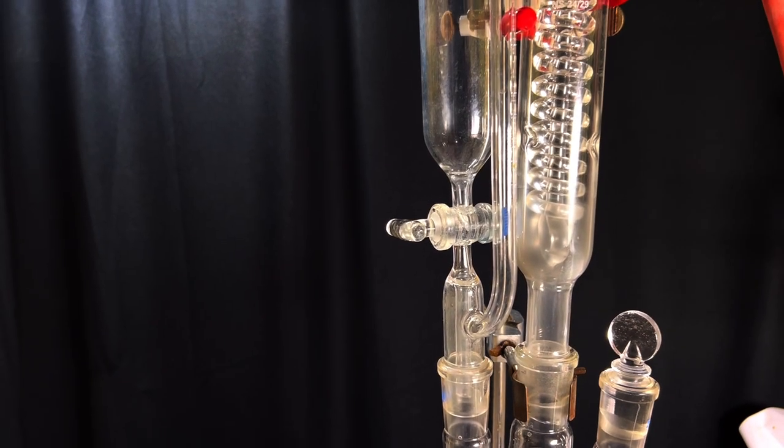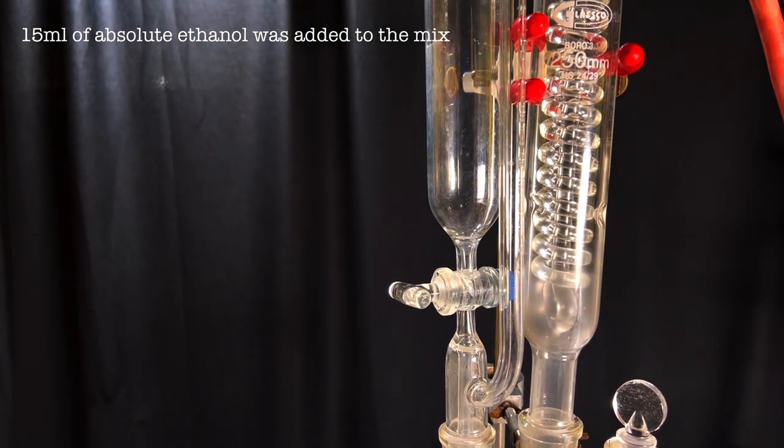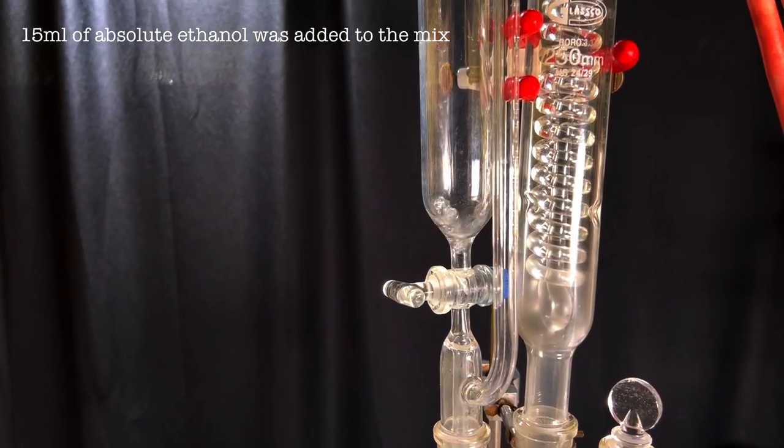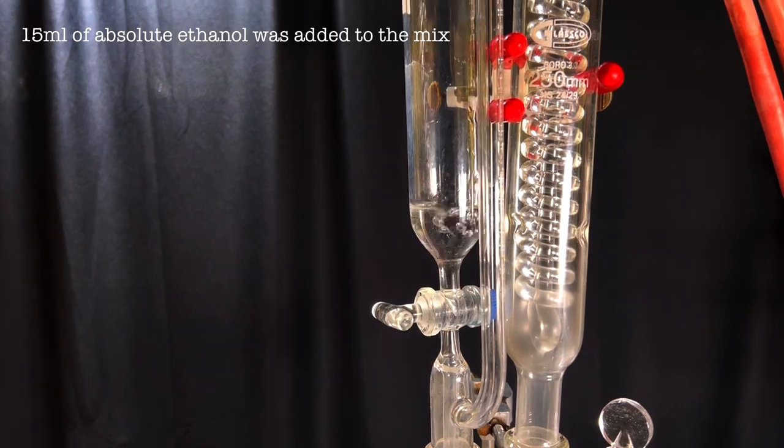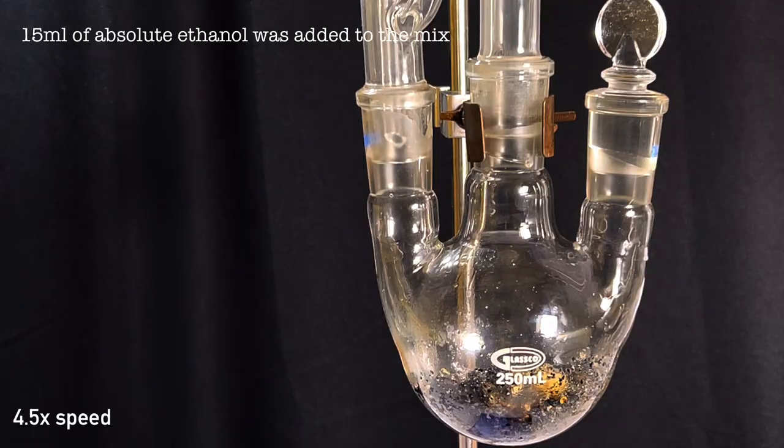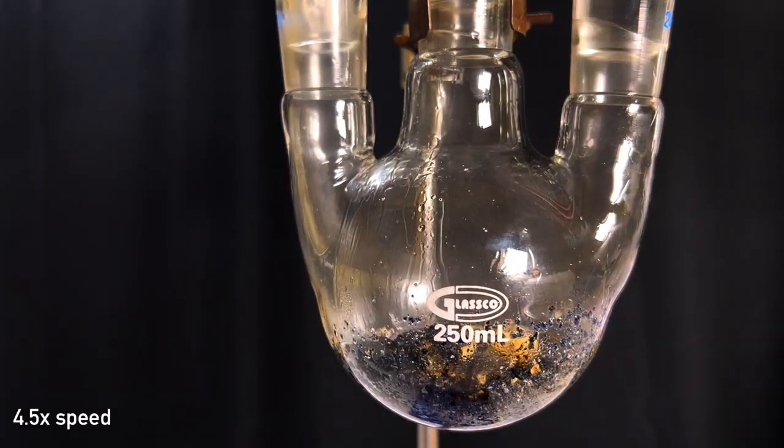Sodium metal can be removed by initially adding 15 ml of absolute ethanol through the addition funnel. Adding ethanol would cause sodium metal to react and heat up the reaction so much that the contents once again start to reflux.